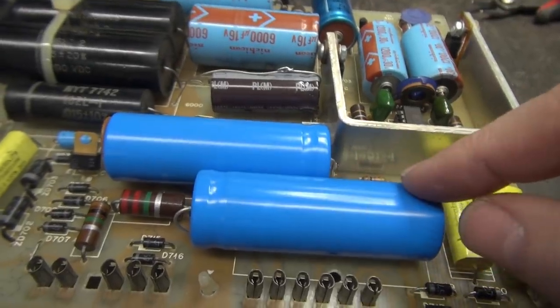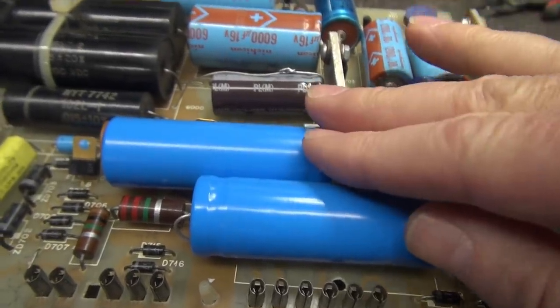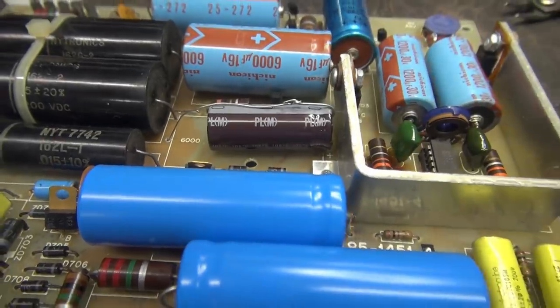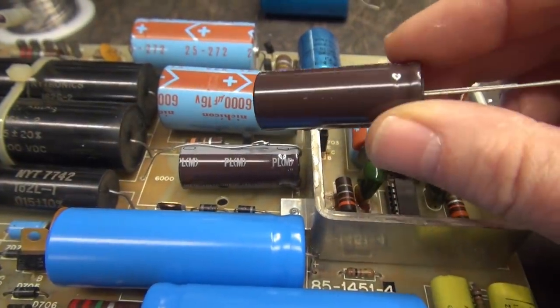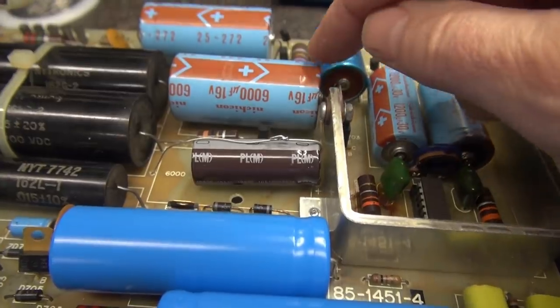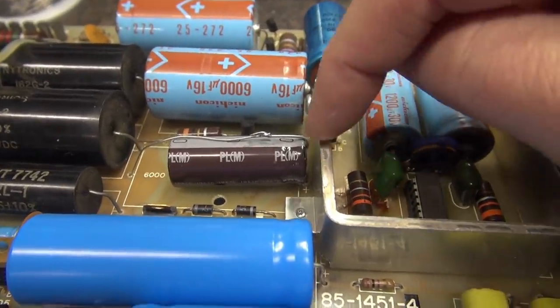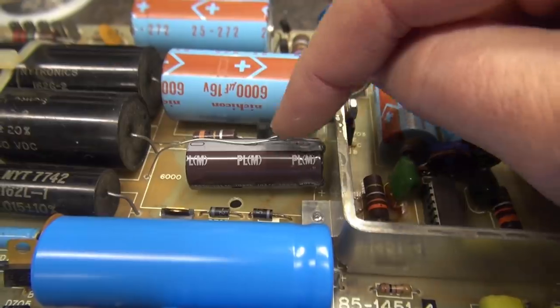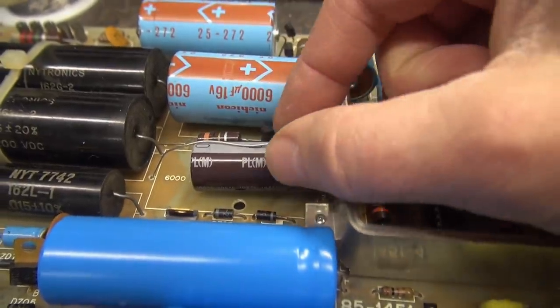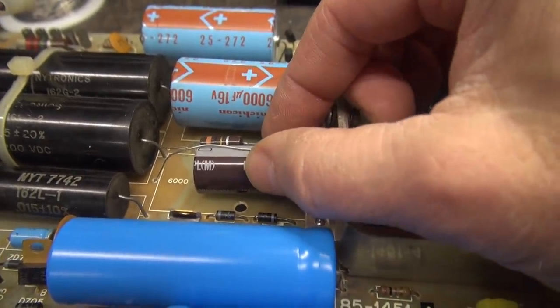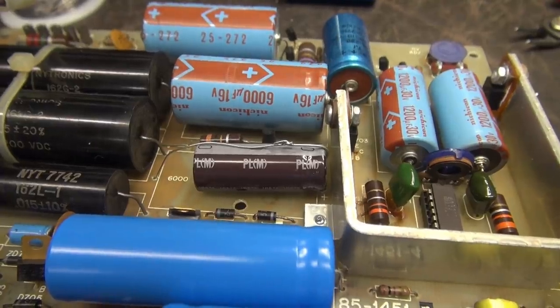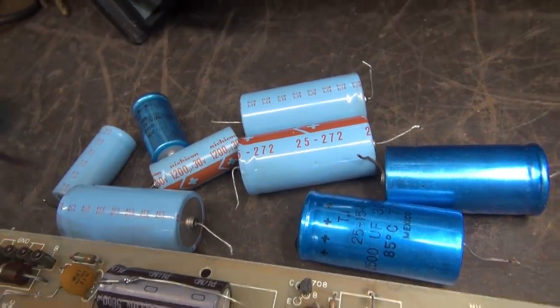So the big 2,200 microfarad caps are installed and you can see here this is one of the new radio mount type that I'm replacing those gigantic 6,000 microfarads with. So the positive shoots down. Then I have a ground runner going over the top. When I get done we'll zip tie these down so they're nice and secure.